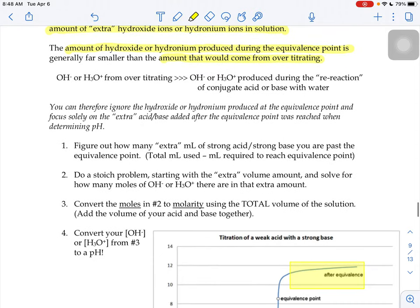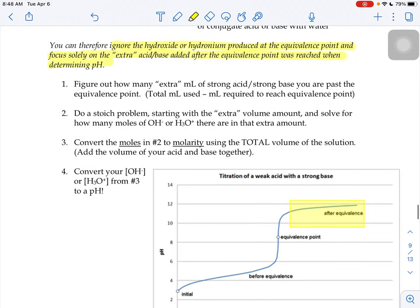So therefore you could ignore the hydroxide or hydronium produced at the equivalence point and just focus on that extra acid or base that you added in there to figure out your pH. You'll figure out how many extra milliliters of strong acid or base you are past the equivalence point. So you'll do the total amount used minus that milliliters to reach the equivalence point.